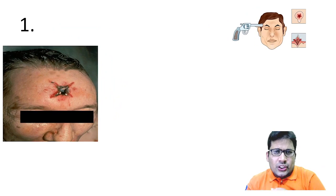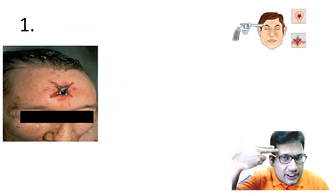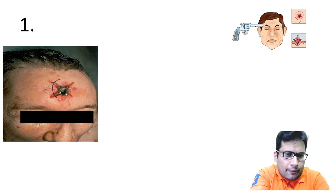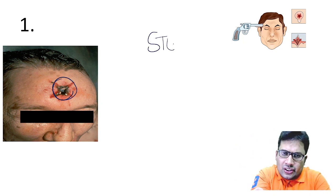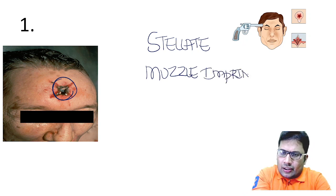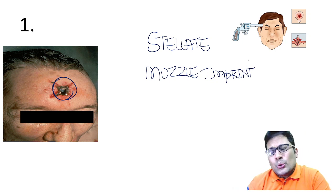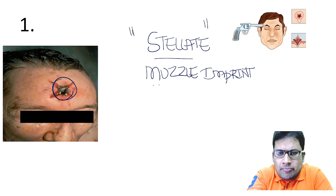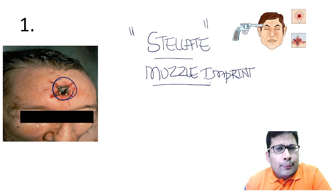Contact shot: you will see a stellate-shaped wound and muscle imprint — these two are important findings in contact shot over the head. Sometimes there can also be back-spatter phenomenon. Close shot: blackening is the feature, usually between 5 to 8 cm. Mnemonic BAGS — B for blackening (due to soot particles), A for abrasion collar (general feature of any entry wound), G for grease collar, S for singeing of the hair. Singeing, blackening, and burning are all features of close shot.